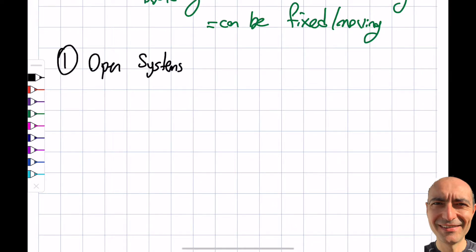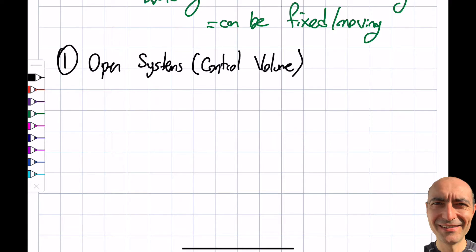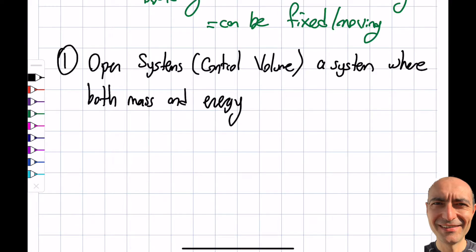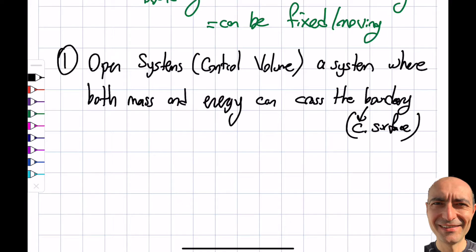Open systems are also called control volumes. In thermodynamics textbooks you'll see analysis for open systems, first law for open systems, first law for closed systems, etc. An open system is a system where I pick a particular volume in space and place no restrictions on it — both mass and energy can cross the boundary, which I call the control surface.